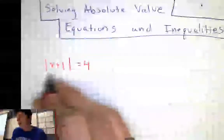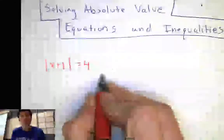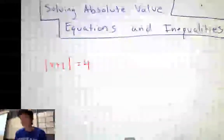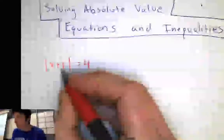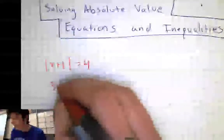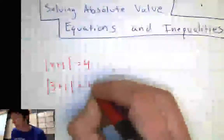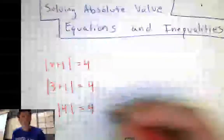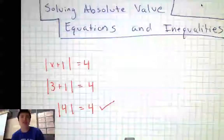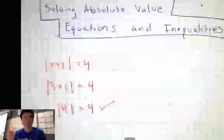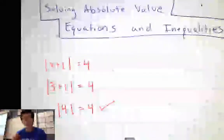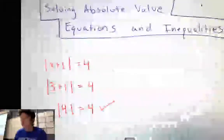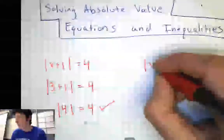So let's say we have the absolute value of x plus 1 equals 4. What could x be to make this true? A really easy answer is to think x could be 3, because 3 plus 1 absolute value would equal 4. 3 plus 1 is 4, and the absolute value of 4 is equal to 4. That would totally work to make this equation true — I can just think of that without doing a lot of math.